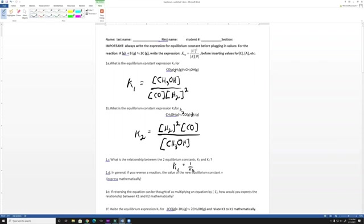That leads us to 1D. In general, if you reverse a reaction, what is the value of the new equilibrium constant? Let's say we have A plus B in a reversible reaction with C plus D. Our equilibrium constant to start with is K forward, which equals concentration of C times D over A times B. K backwards, the reverse, would be 1 over K forward.